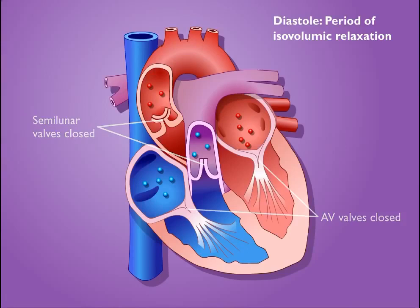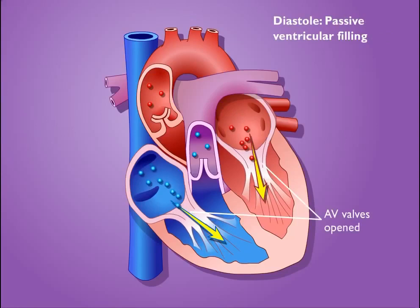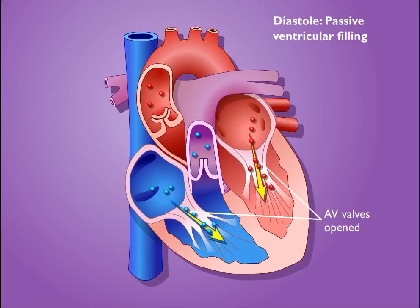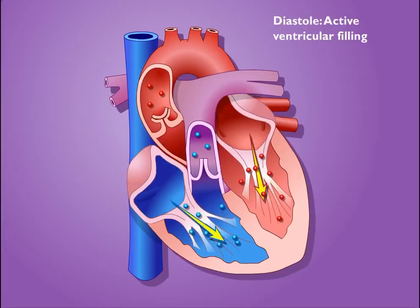When the pressure in the ventricles becomes lower than the pressure in the atria, the atrioventricular valves open and blood flows into the relaxed ventricles. This accounts for most of the ventricular filling. The atria then contract and complete the ventricular filling.